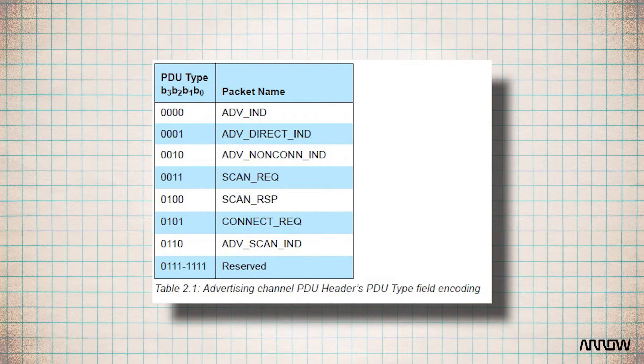The 8-bit header has the following meaning. Four bits define the type of advertising packet. You have general advertising indication, direct connection indication, non-connectable indication, scannable indication, active scanning request, active scanning response, and connection request.